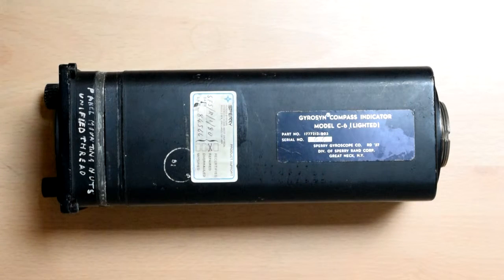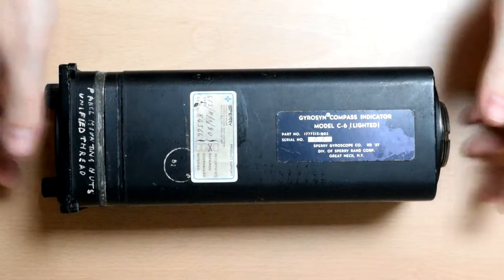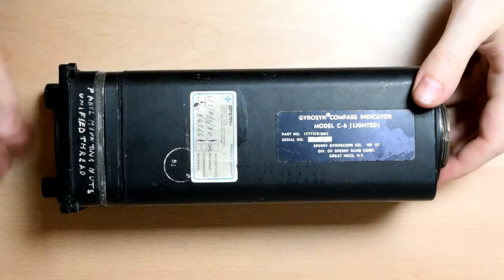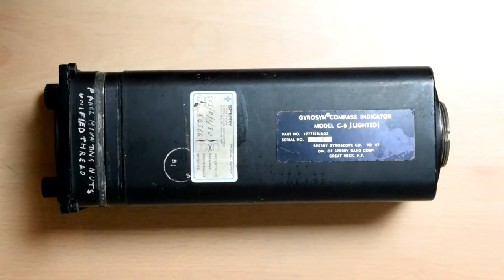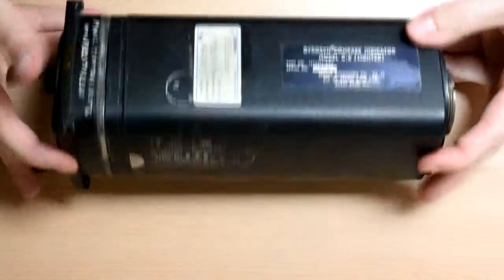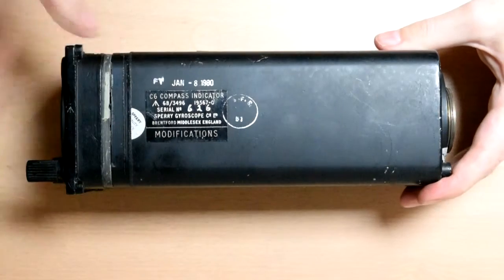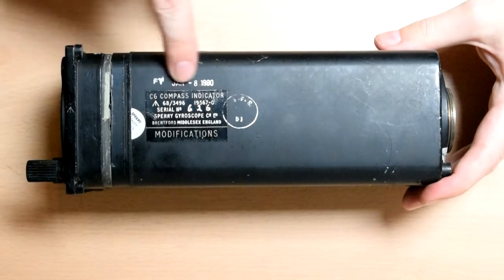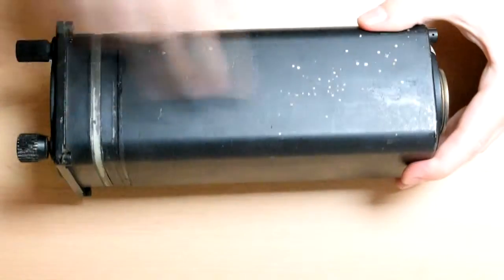Hello YouTube. Right, so what have we got today? This is a lovely item actually. It is a gyrosyn compass indicator of some random military aircraft made by Sperry. There's a lot of good things here. It has another sticker there as well as the date, 1980, in fairly good condition.